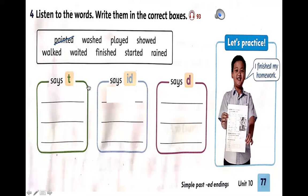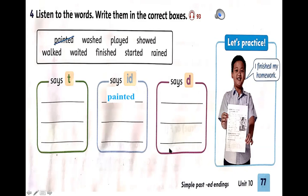Painted, washed, played, showed, walked, waited, finished, started, wained, handed. Bài học của chúng ta đến đây là kết thúc. Thầy hy vọng là các bạn làm đúng cái phần điền từ vào đây — nó sẽ không khó lắm. Và sau khi kết thúc cái phần học này, thầy hy vọng là các bạn đã biết cách phát âm những động từ có đuôi ED một cách đúng. Goodbye class, see you next time.